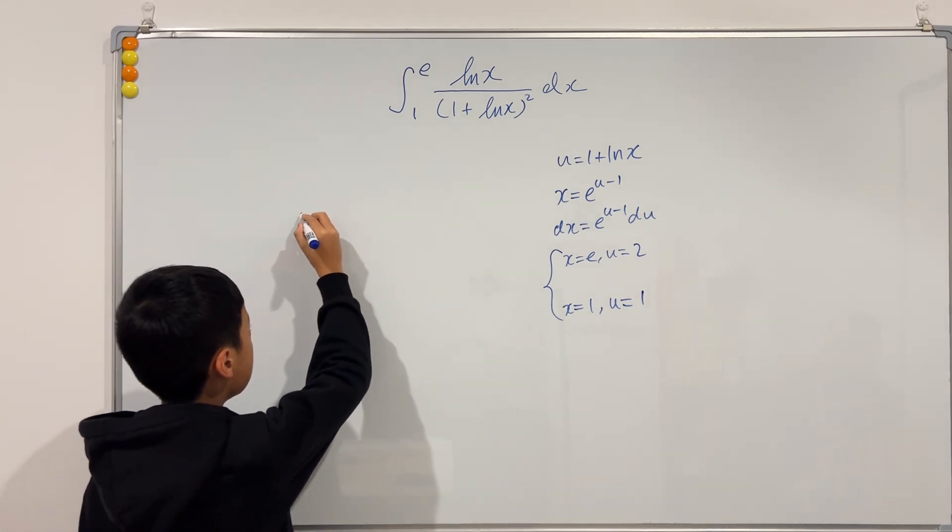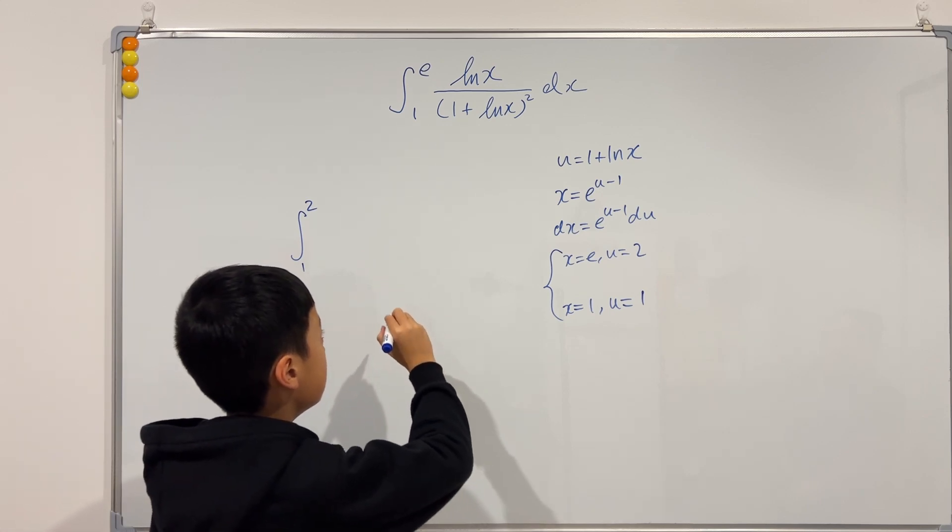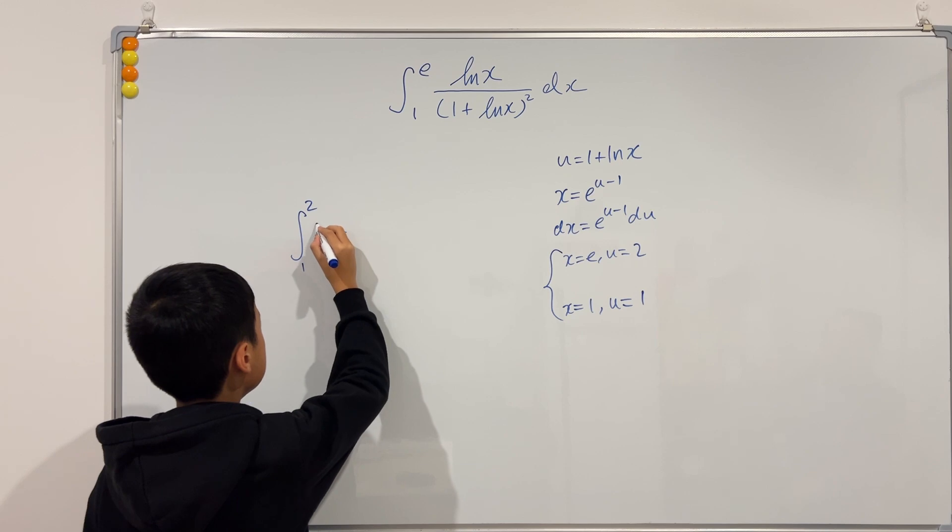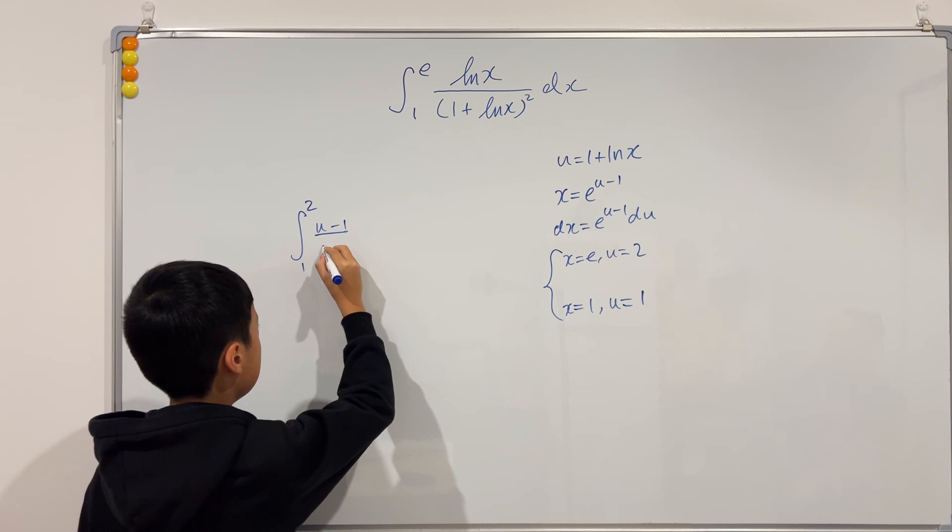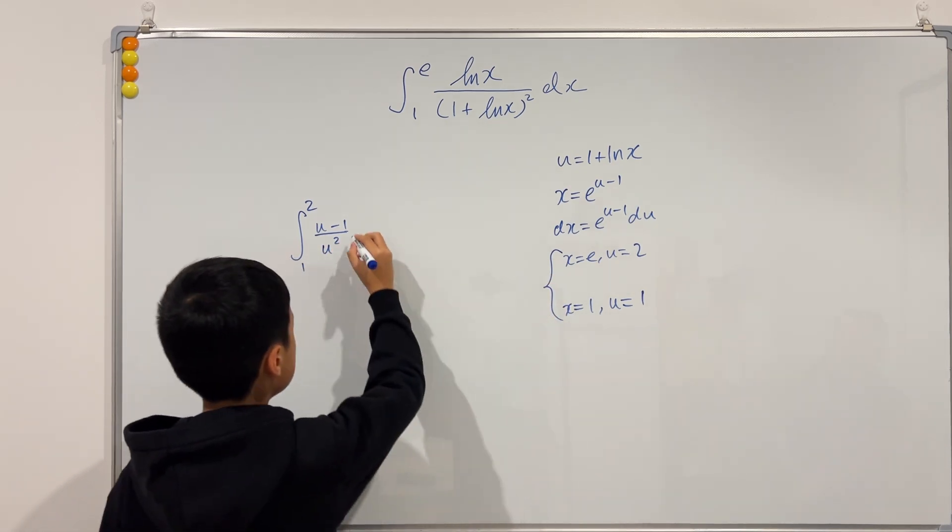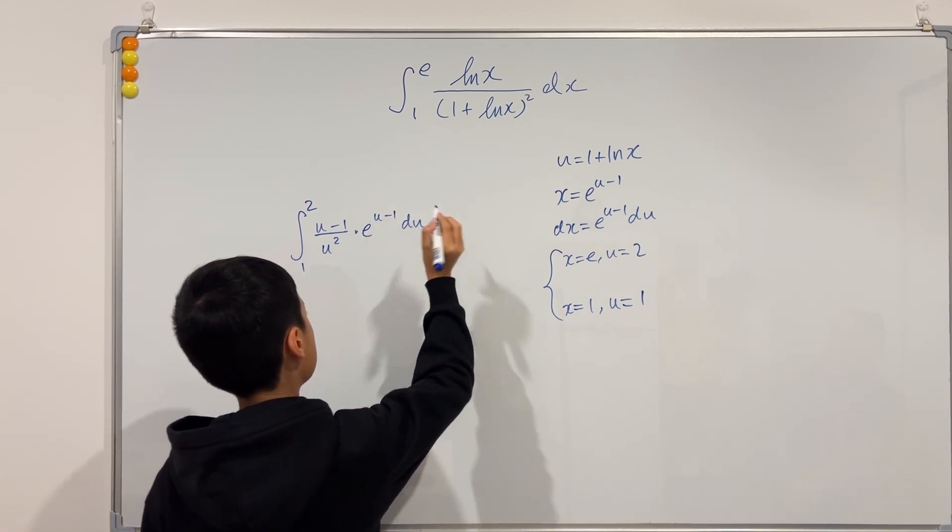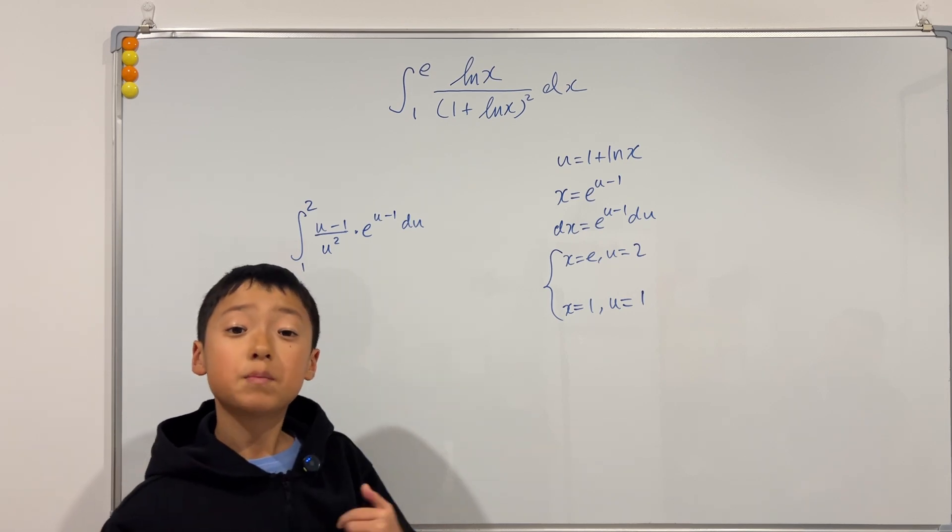So our new integral goes from 1 to 2. So that ln of x is just u minus 1, the bottom is u squared, and then the dx is just e to the u minus 1 du. So now we can actually use partial fractions.